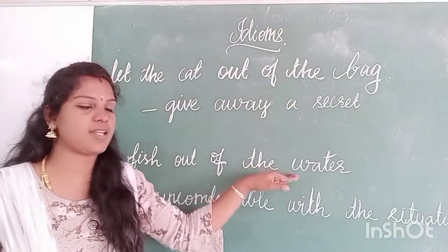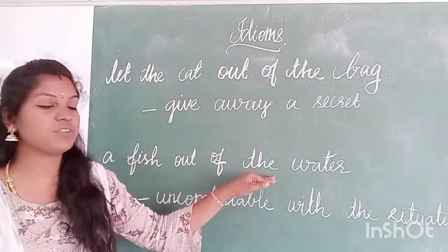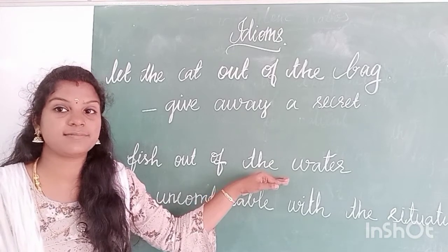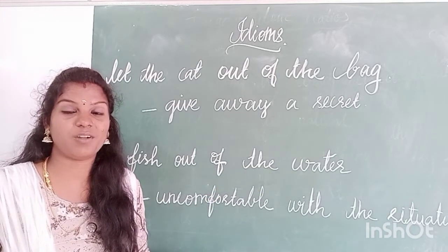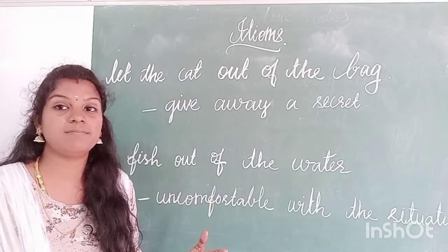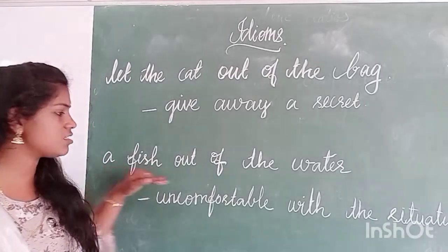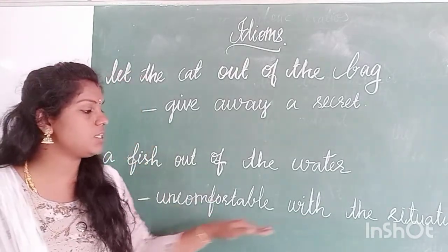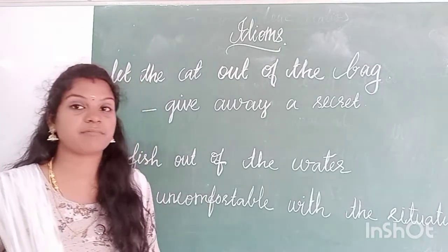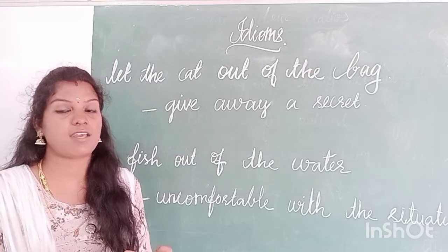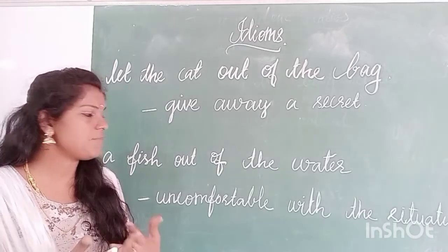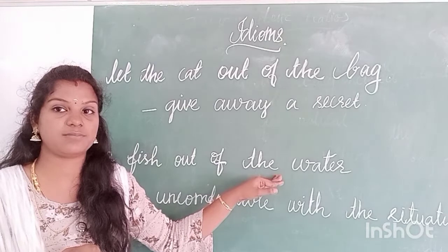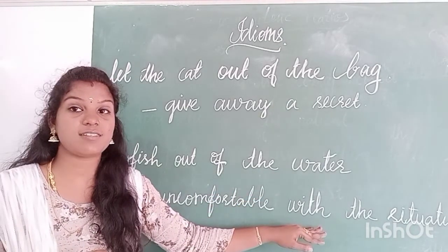And 'a fish out of water.' What is the condition of a fish out of water? If the fish is out of water, will it live? No, it will die — it's in an uncomfortable situation. A fish out of water means uncomfortable with the situation. For example, when you go to your relative's house — aunt's or uncle's house — sometimes you feel uncomfortable there. So you can say you feel like a fish out of water, which means uncomfortable with the situation.